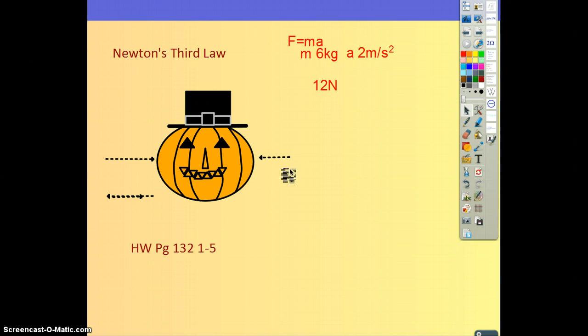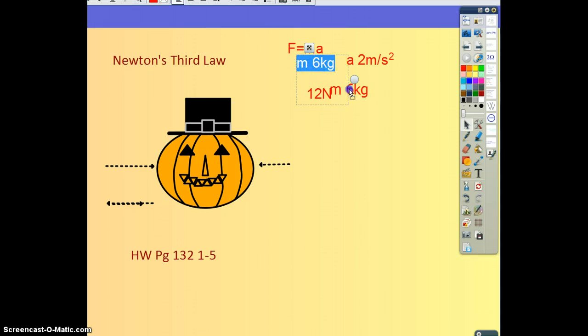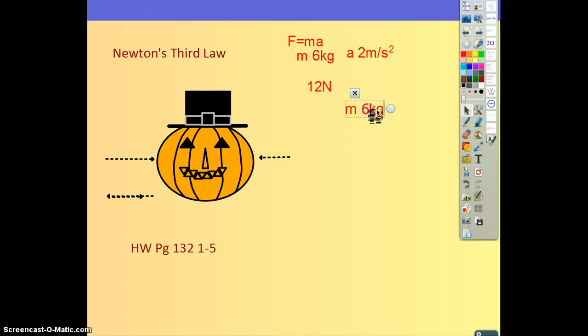Part B then says, if the same force is applied to a 4 kilogram object, what is the acceleration it produces? So, the same force, 12 newtons, applied to a 4 kilogram instead of a 6. A 4 kilogram object instead of 6. So, 12 newtons, F equals MA, 12 newtons equals mass of 4 kilograms times acceleration A.